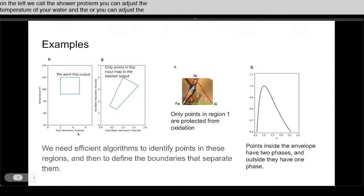That leads to an overall temperature and an overall volumetric flow. You want the conditions to be in this square in this output and we want to find this boundary on the right here that shows you what settings you can use to get a good shower.